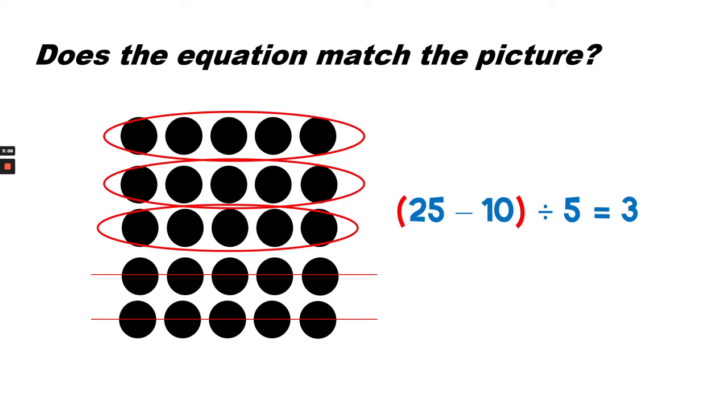It matters where the parentheses are in an equation. This equation says 25 minus 10 in parentheses divided by 5 equals 3. So let's look at the array. How many are in each row? There are 5 in each row. How many rows in all? There are 5 rows in all. 5 times 5 is 25.